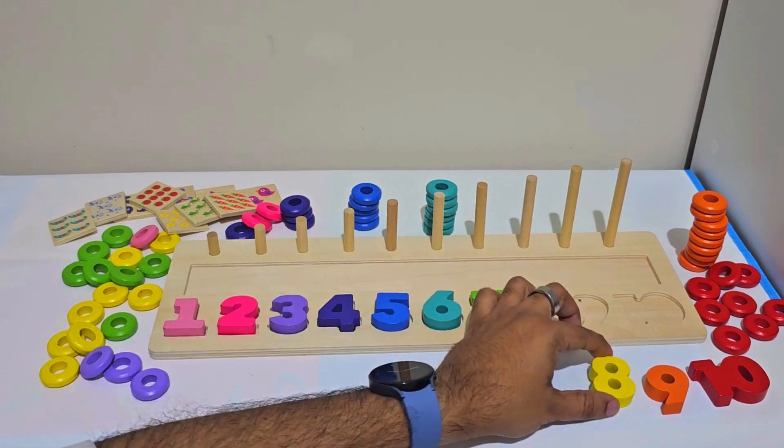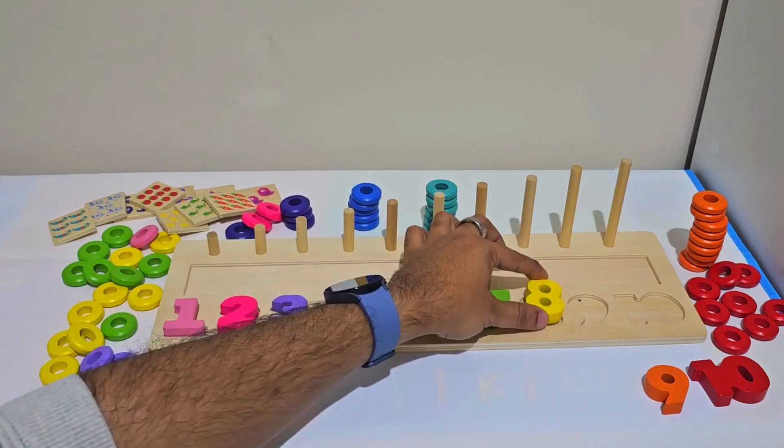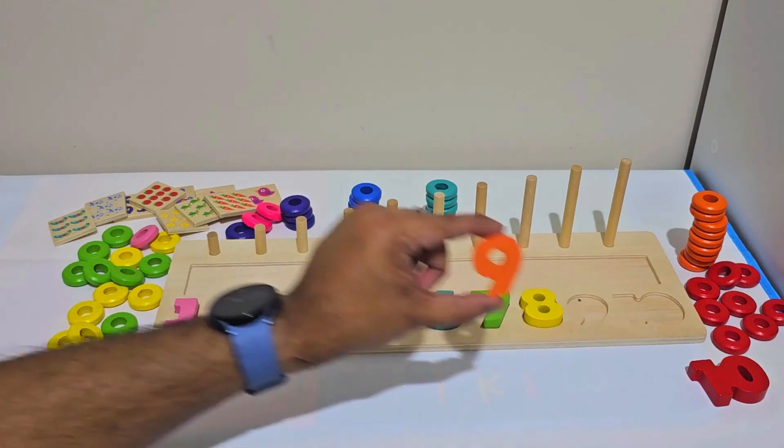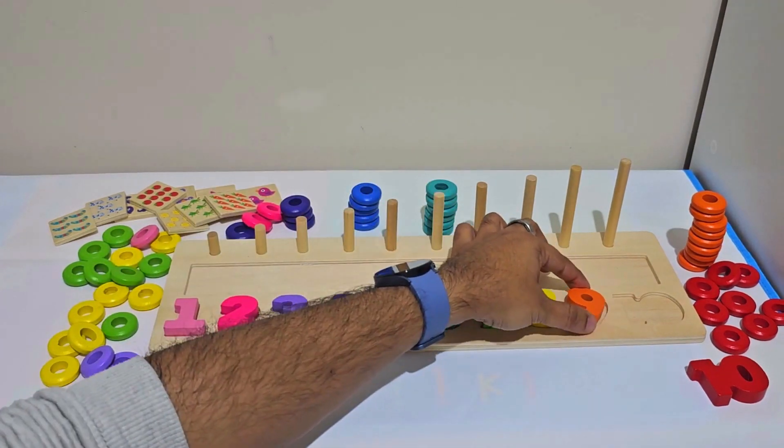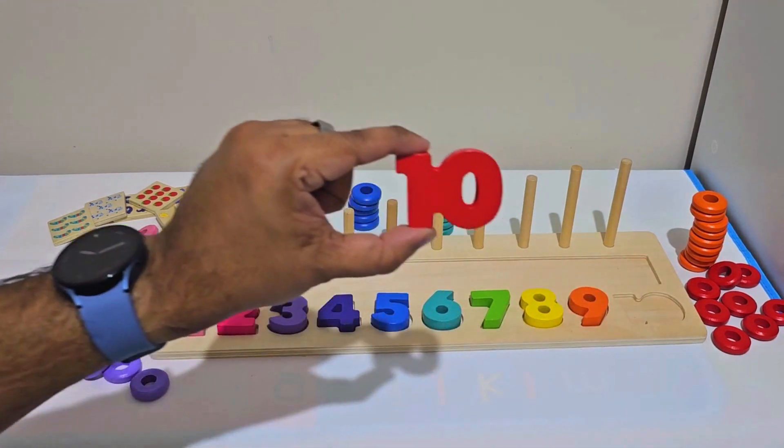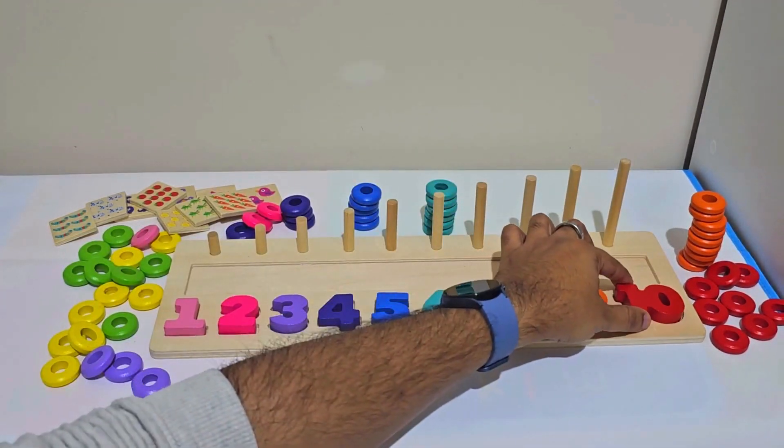This is number 7 in green. This is number 8 in yellow. This is number 9 in orange. And this is number 10 in red.